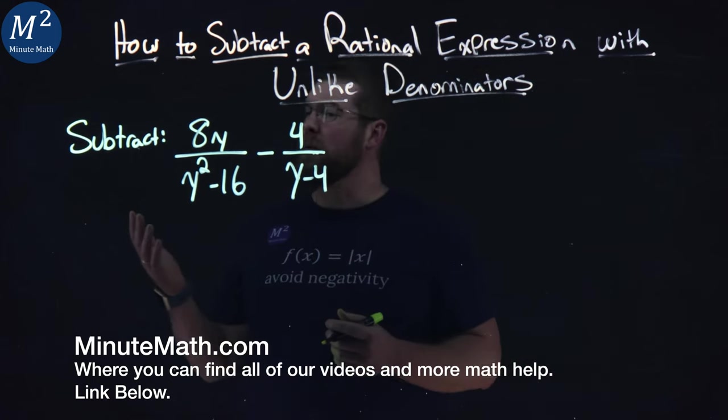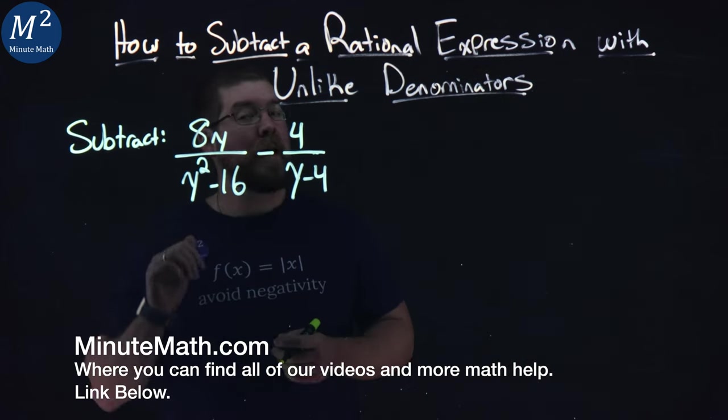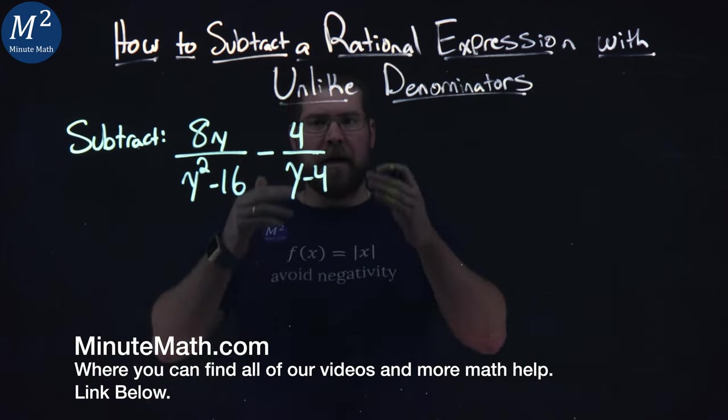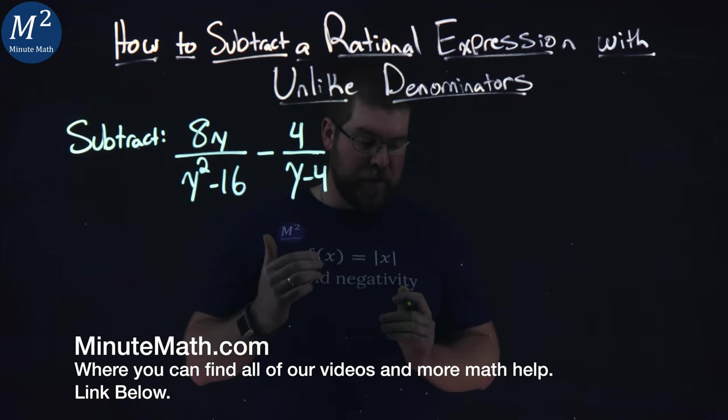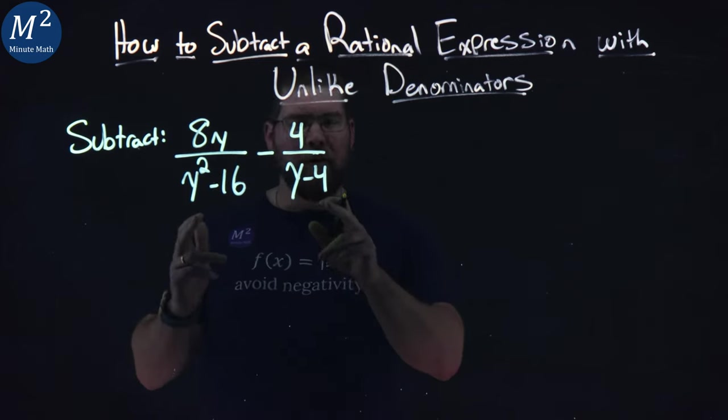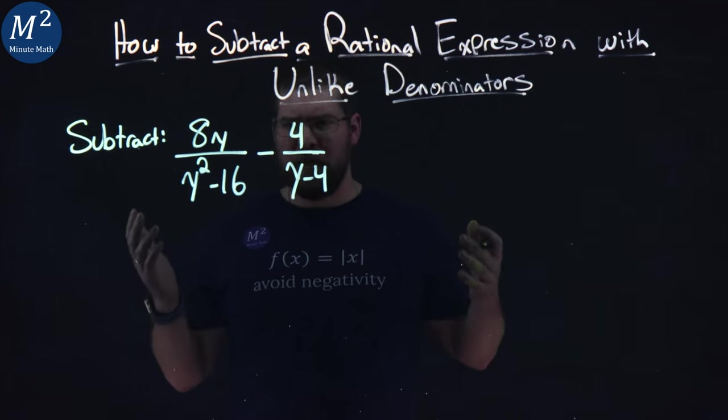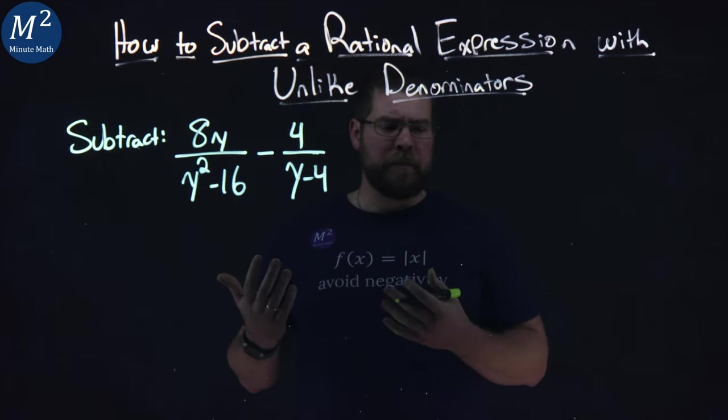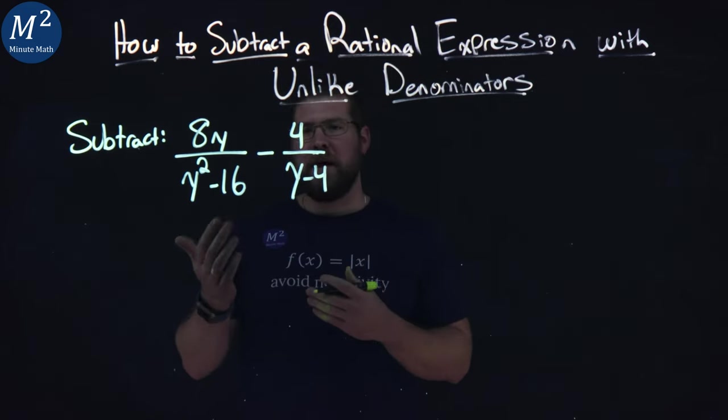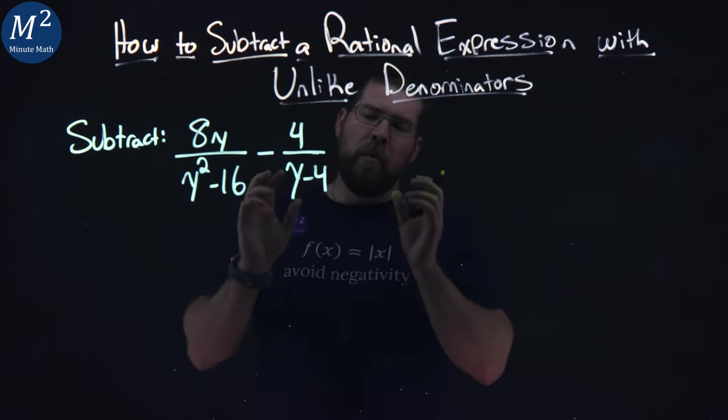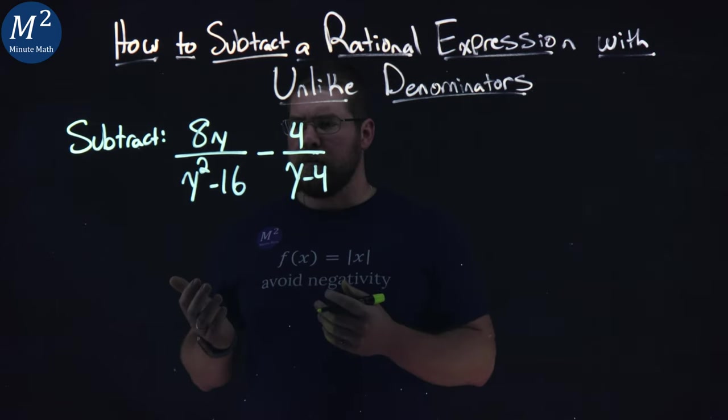We're given this problem: We have to subtract 8y over y squared minus 16, minus 4 over y minus 4. Just like the title suggests, our denominators are unlike - not the same. So what do I do? Well, just like normal fractions that we're subtracting, I want to have a common denominator. So how do I do that?